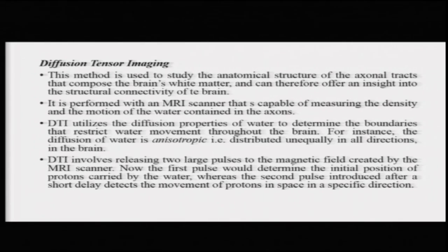Let us talk about another very important method: diffusion tensor imaging. DTI is used to study the anatomical structure of the axonal tracts that compose the brain's white matter. The white matter is basically the axons of the billions of neurons forming the brain, whereas the grayish surface is the cell bodies. DTI is focused on studying the anatomical structure of the brain using these axonal tracts, and it can offer very detailed insight into the structural connectivity of the brain.